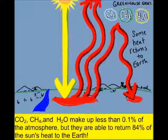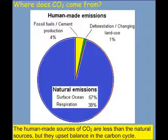We know that CO2 is one of the main greenhouse gases, and the question is where does it come from? It turns out that 95% of the CO2 in our atmosphere actually comes from natural sources like volcanoes, fires, the ocean, and the respiration of animals. About 5% comes from human-made emissions from fossil fuels, cement production, deforestation, and changing land use. Even though this is only about 5%, that's enough to upset the balance in what's called the carbon cycle.